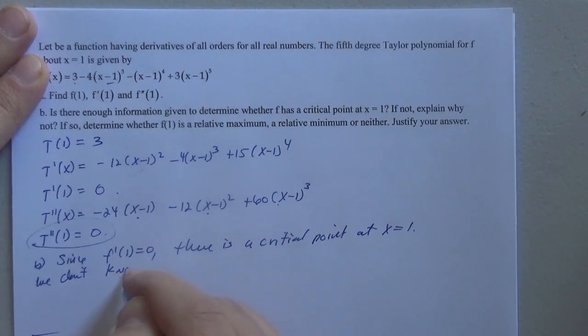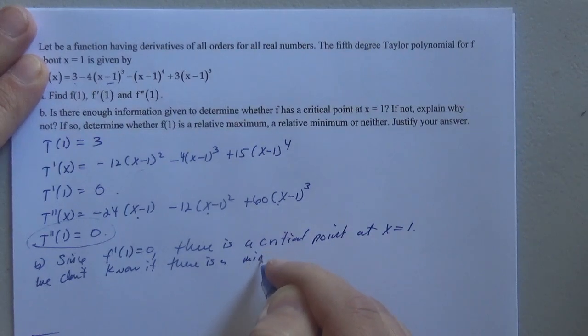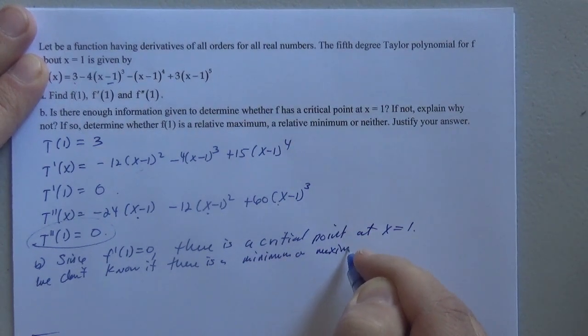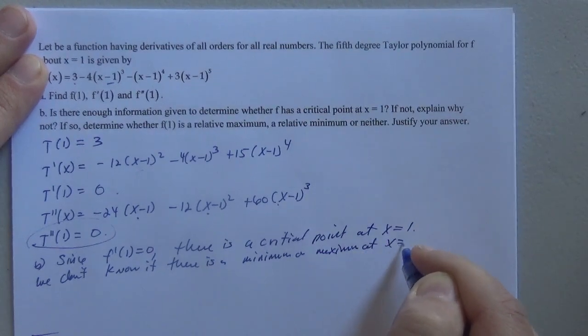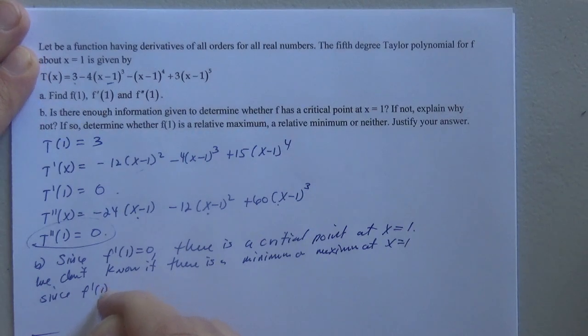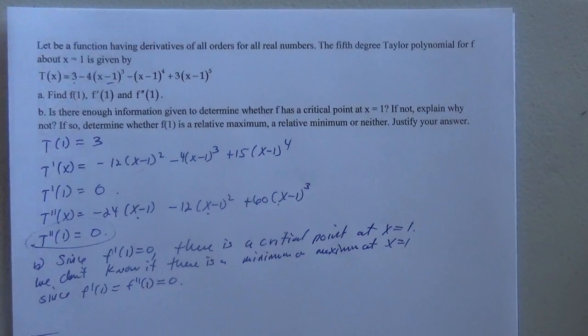We don't know if there is a minimum or a maximum at x equals 1, since f prime of 1 equals f double prime of 1, which equals 0.